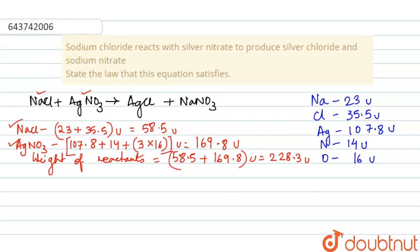Next we have to find the weight of the products. First we have AgCl, that is, 107.8 plus 35.5 atomic mass unit, which equals 143.3 atomic mass unit.